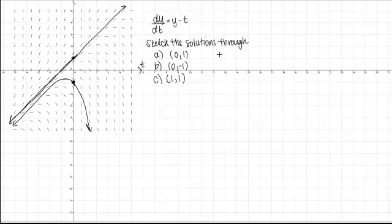Let's do finally part C, the solution through point (1,1). Point (1,1) is here and once again I'm just going to follow the flow of my little lines. It looks like right there at point (1,1) I'm kind of on a flat, maybe a flatter part of the curve, see I've got these horizontal tangent lines.